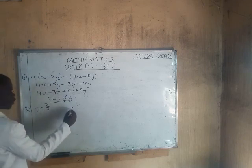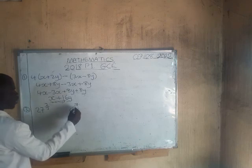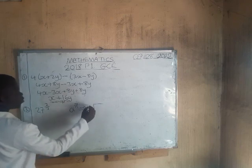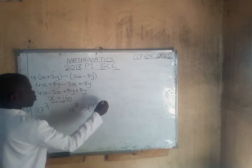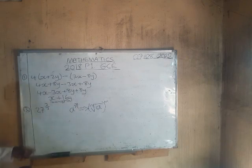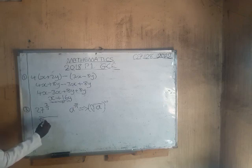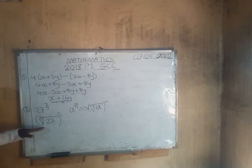The law states that a to the power m over n is equivalent to the nth root of a, raised to the power m. So for 27 to the power 2/3, the 3 joins the root sign, 27 goes under the root, and 2 becomes the power.